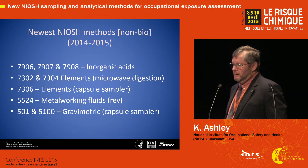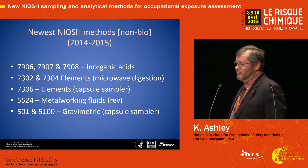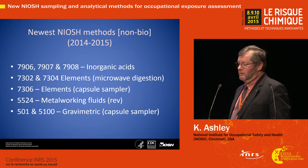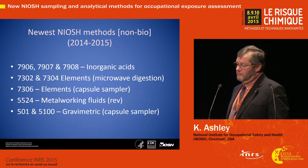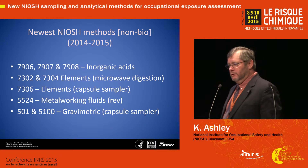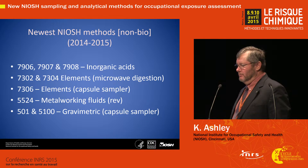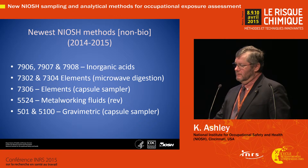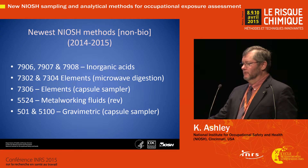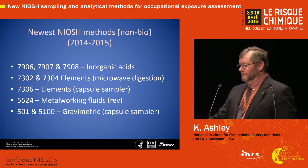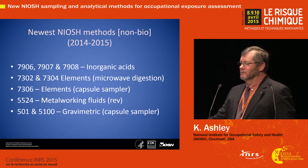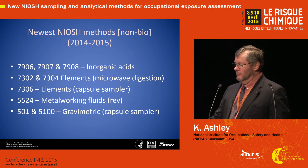Some of the newest methods are summarized here. We've got new methods for inorganic acids based largely on methods developed at IFA in Germany. There are some new methods dealing with elemental analysis, a revised method for metalworking fluids, and then use of a capsule sampler for gravimetric analysis, which should be published imminently.